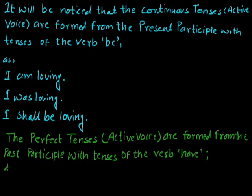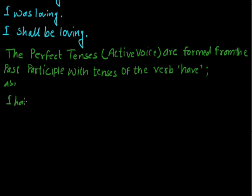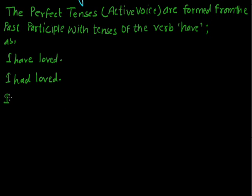When I say 'I have loved', the verb 'loved' is the past participle used in the present perfect tense. When I say 'I had loved', again 'loved' is the past participle used in the past perfect tense. And when I say 'I will have loved' or 'I shall have loved', again 'loved' is the past participle used in the future perfect tense.